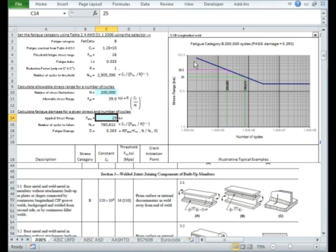This is automatically plotted on an SN diagram and it shows us that our 25 KSI applied is less than the allowable stress for 200,000 cycles because that reads off at 39 KSI. In fact, with a stress range of 25 KSI, it's good for 760,000 cycles of load.